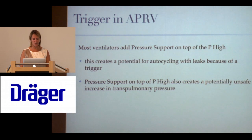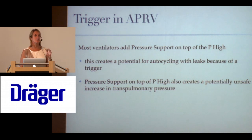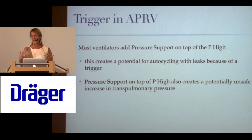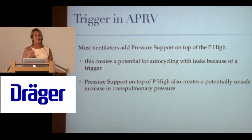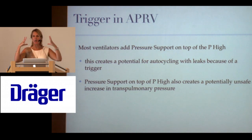Regarding triggers in APRV: adding pressure support on top of P high can potentially be unsafe. If you're at or near TLC and you trigger the vent adding even more volume on top of P high, you could be in an unsafe range. Take a deep breath right now and try to breathe on top of that — the diaphragm is flat and you cannot. Just triggering the vent with pressure support added could push volume into an unsafe area.